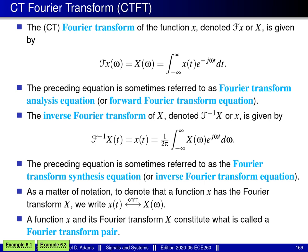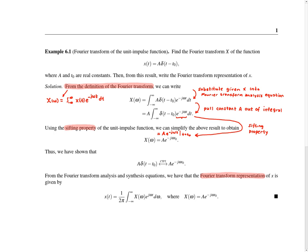I'd like to consider a couple of examples in which we compute Fourier transforms of functions. In particular, let's begin with Example 6.1. In this example, we're asked to find the Fourier transform of the function little x, where little x is given by A times δ(t − t₀), and we're told that A and t₀ are real constants. So effectively, what we have is a delta function that's been translated or time-shifted by t₀ and scaled by a factor of capital A. We're also asked to write the Fourier transform representation of x. To find the Fourier transform, we recall the definition of the Fourier transform and substitute in for little x the function we're given, which gives us this line.